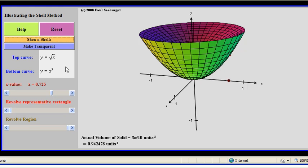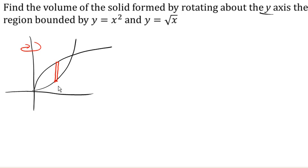Let's see if we can figure out how to set this up. Given an x-value here, we know that this y-value is x-squared, and this y-value is square root of x, corresponding to those two functions. The height here is top function minus bottom function, so root x minus x-squared.